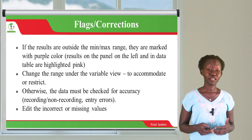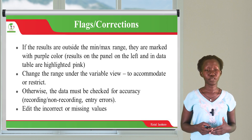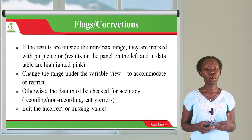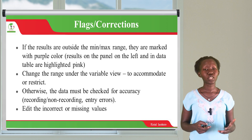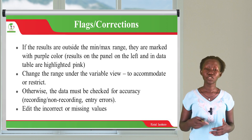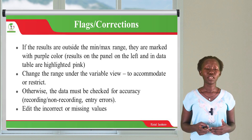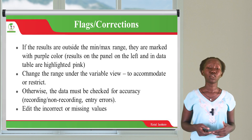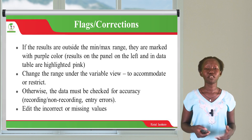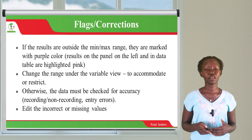The data must always be checked for accuracy — recording and non-recording entry errors, all of that. You have to look at values like negative six and edit and correct all the missing values so that you have accurate data.